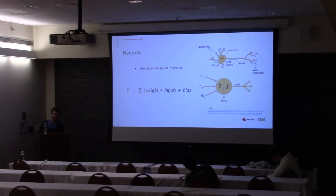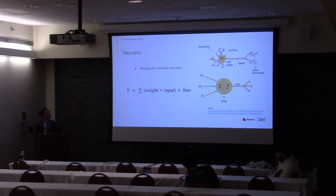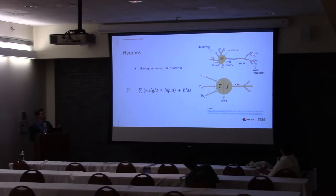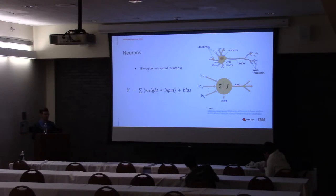Let's start with an analogy. Neural networks are inspired by the most efficient and powerful machine existing, which is the brain. We see that dendrites receive some signals, this goes into the cell body which processes the signals, and the output is sent to other neurons. As an analogy, we have artificial neurons which receive different inputs as numbers, processed with some weights and biases in order to produce some output.